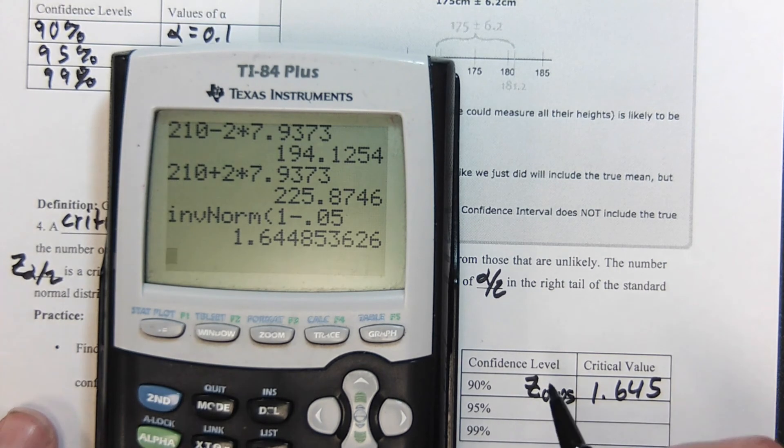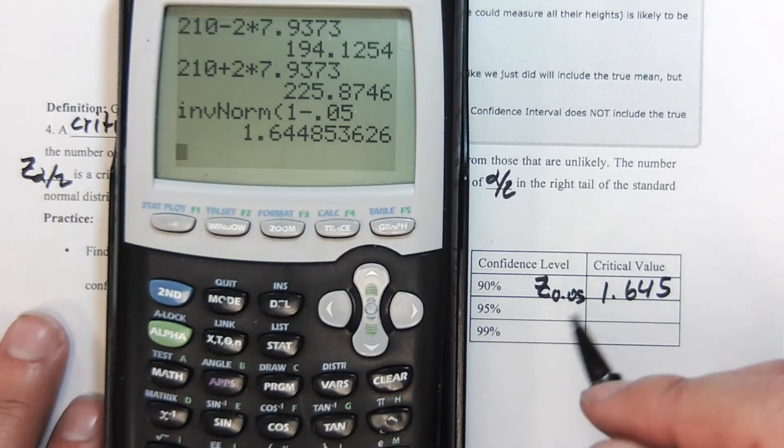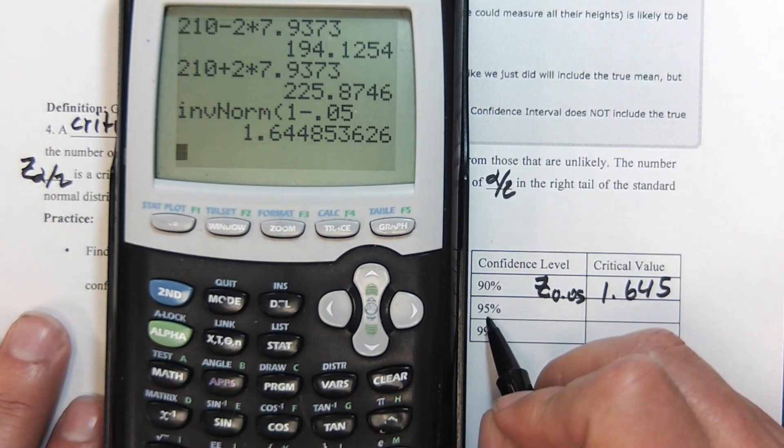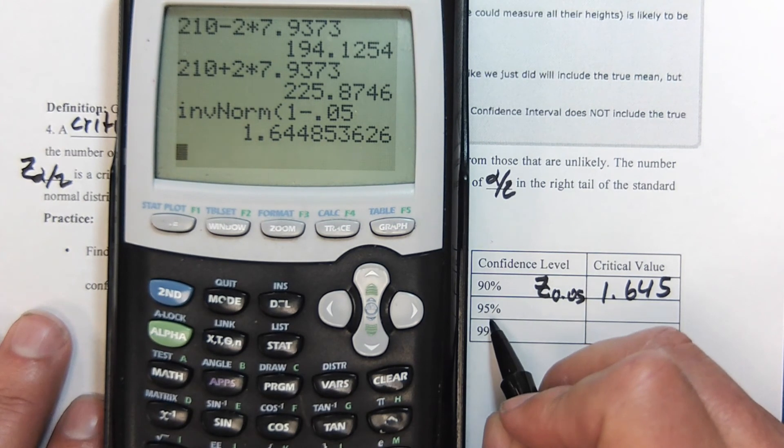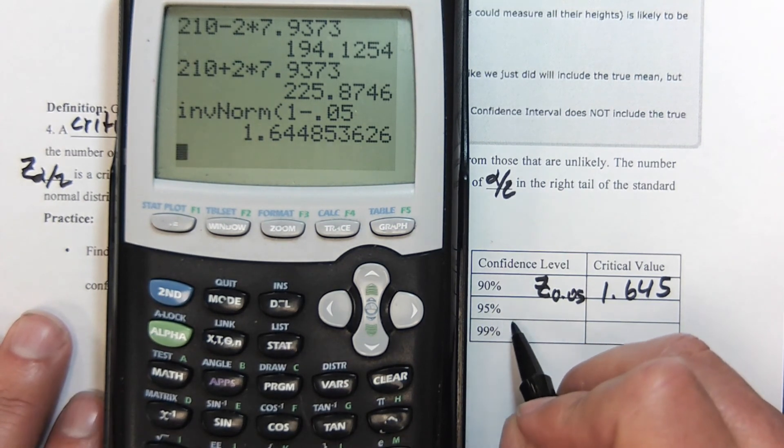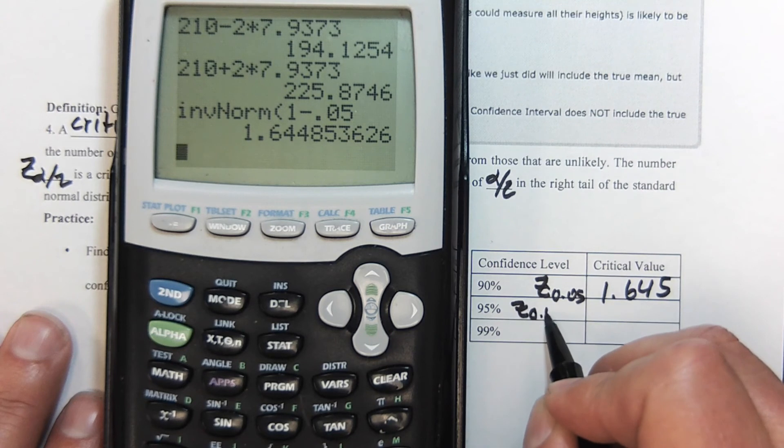Inverse norm only knows area to the left, so this is going to be 1 minus 0.05, meaning our critical value in this case is 1.645. For 0.95, that means what's missing—the alpha in this case—is 0.05, and half of that is 0.025.